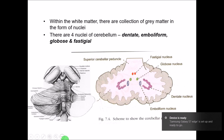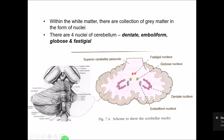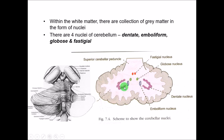The cerebellum has four pairs of nuclei — collections of cell body neurons within the white matter. The four nuclei are: the dentate nucleus (the largest), the emboliform nucleus, the globus nucleus, and the fastigial nucleus. These four pairs of nuclei are present on either side within the cerebellar hemispheres, deep inside the white matter, not on the surface.